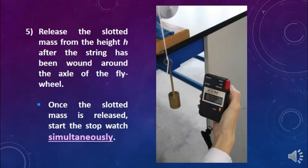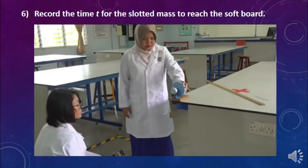Procedure 5: Release the slotted mass from the height H after the string has been wound around the axle of the flywheel. Once the slotted mass is released, start the stopwatch simultaneously. Procedure 6: Record the time t for the slotted mass to reach the softboard.